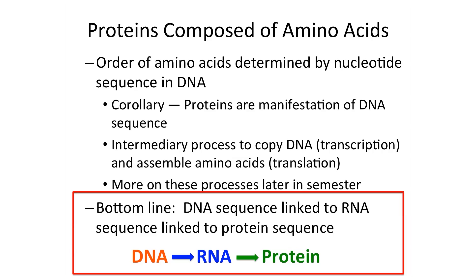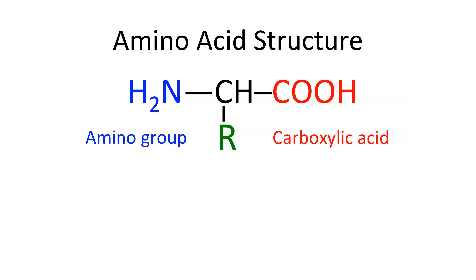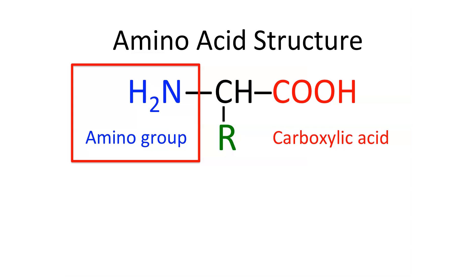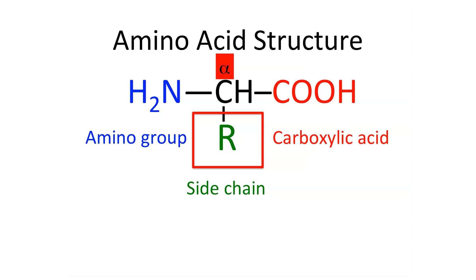Without the sequence in DNA, you don't get the protein sequence. Proteins are composed of amino acids, and they have an amino group and a carboxylic acid group — hence, amino acid. They also have an alpha carbon to which is attached a side chain, and that side chain is what varies. The amino, alpha carbon, and carboxyl form the backbone, and the nature of the side chains determines the structure of the protein.